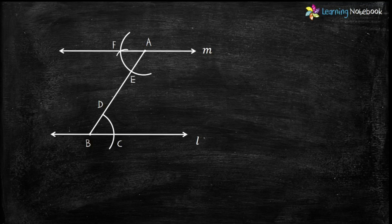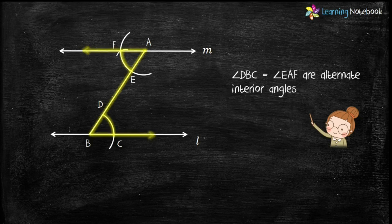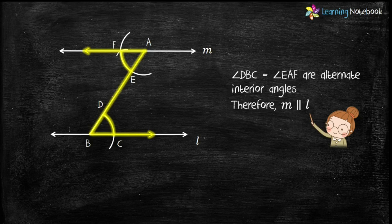We have drawn line M parallel to line L. Now, why is M parallel to L? Because we have constructed angle DBC equals to angle EAF which are alternate interior angles. Therefore, line M is parallel to line L.